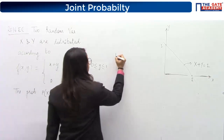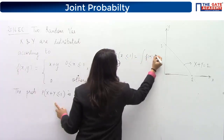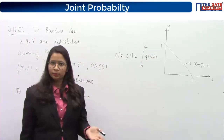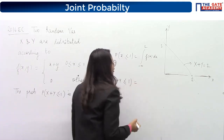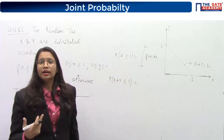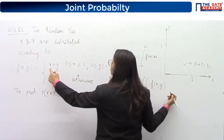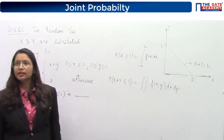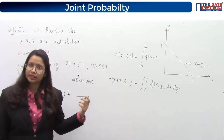For a single variable, you integrate the function over some limit — say from negative infinity to 1. But with two variables X+Y ≤ 1, you need to double integrate. The double integration should be done over the probability distribution function f(x, y) with respect to dx dy. For a single variable you integrate once; for two variables you double integrate.